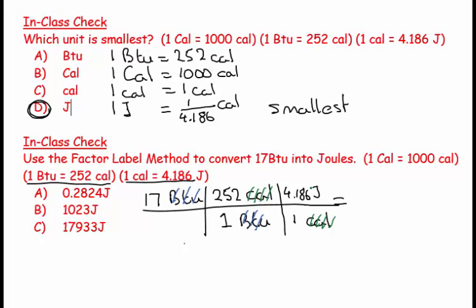If I look here, it's going to be 17 multiplied by 252, enter, multiplied by 4.186, enter. And I'm going to get 17933 Joules. 17933 Joules is my answer, and there it is.